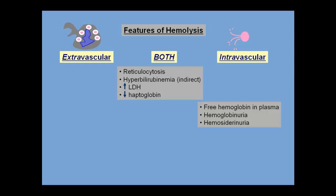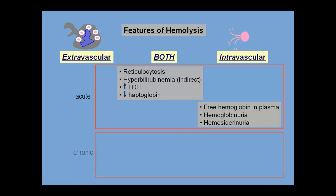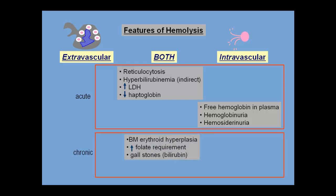You can get a feel for how long a patient has experienced hemolysis. Within hours to days, there will be reticulocytosis, indirect hyperbilirubinemia, increased LDH, and decreased haptoglobin — and in the case of intravascular hemolysis, hemoglobinemia, hemoglobinuria, and eventually hemosiderinuria. Within days to weeks, marrow erythroid hyperplasia appears and folate requirements increase. When hemolysis is present for years, bilirubin gallstones appear. All of these features occur in extravascular or intravascular hemolysis, but only chronic intravascular hemolysis can result in iron deficiency.